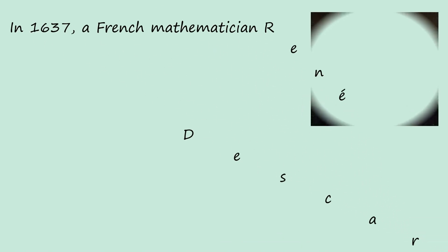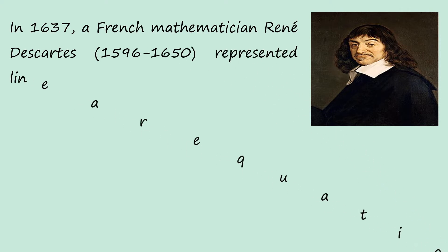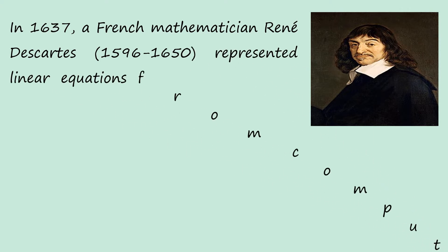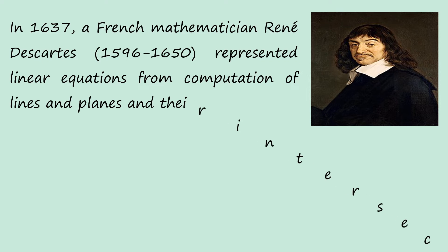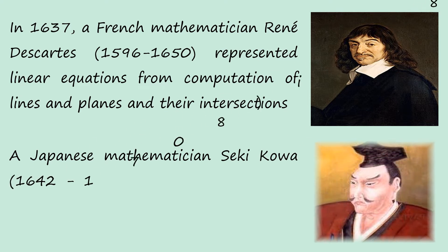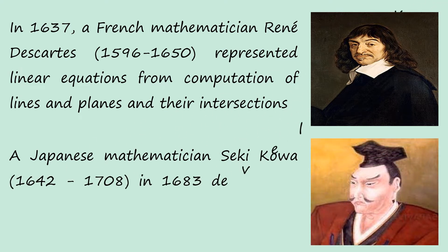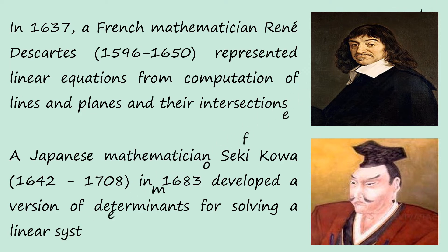A French mathematician, René Descartes, represented linear equations from computation of lines and planes and their intersections. A Japanese mathematician, Seki Kowa, in 1683 developed a version of the determinant for solving a linear system of equations.